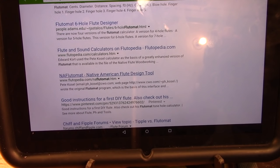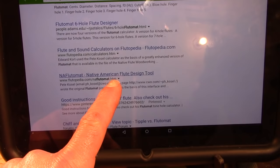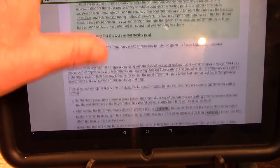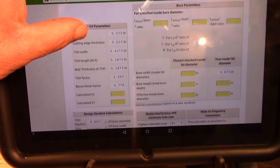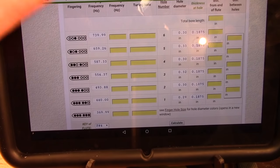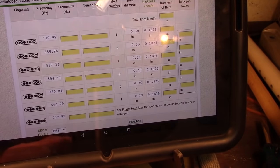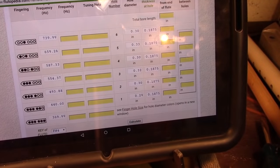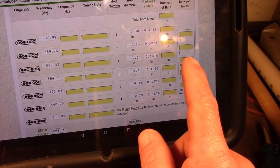Since we're making a Native American style flute, we're going to go to NA Flutomat, Native American Flute Design Tool on the web. Once you get there, then scroll down and fill out all the pertinent fields. We won't discuss that in this video, we'll leave that for you to figure out. Once you get there, if you fill in all the right information, it will give you the hole placement here.